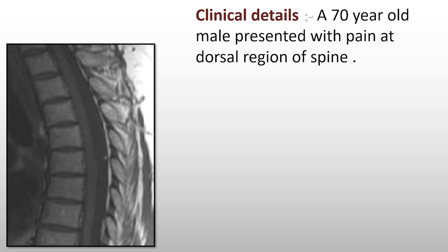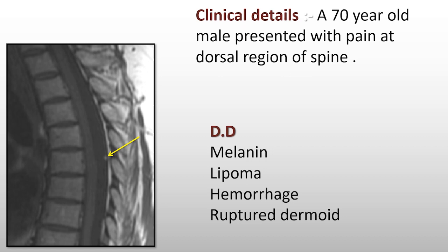When dealing with T1 hyperintensity, we need to consider a few differential diagnoses. First, melanin — such as meningeal melanosis — can present similarly, but it is unlikely to produce a single drop lesion; it is typically a diffuse entity. Second, a lipoma of the dura is possible, though it cannot be freely floating in the subarachnoid space and must be attached to a structure. The lesion is too small to fully characterize. Hemorrhage — subarachnoid hemorrhage in the spine or extension from the brain — can also look like this.